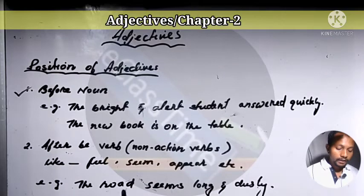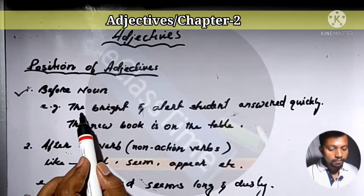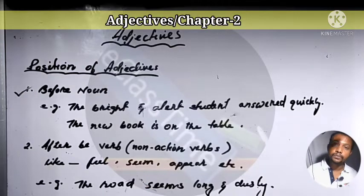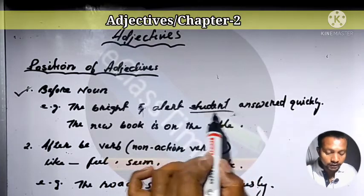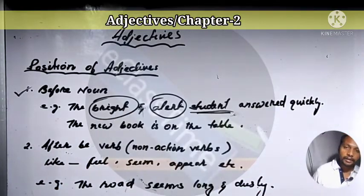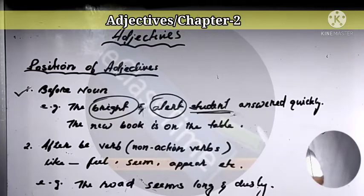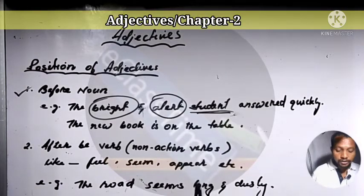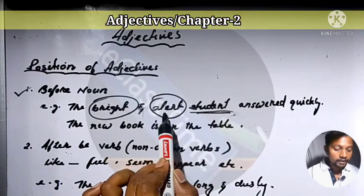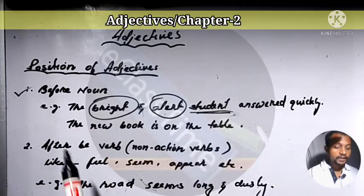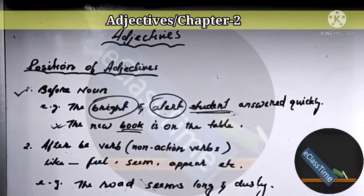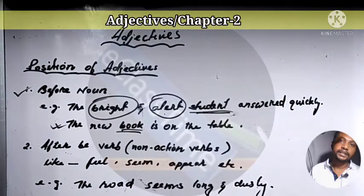One example is very nice. What is written? The bright and alert students answered quickly. Student is the noun. Alert and bright come before student, so before noun we find the quality adjectives. Another example: the new book is on the table. Book is the noun, and before that comes new.